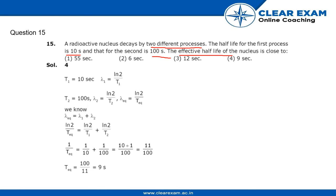effective half-life of the nucleus. Okay, let's move to the solution. The half-life of the first process is 10 seconds, and lambda 1 is log 2 by T1. The second half-life is 100 seconds, and the formula for lambda 2 equals log 2 by T2. So lambda equivalent equals